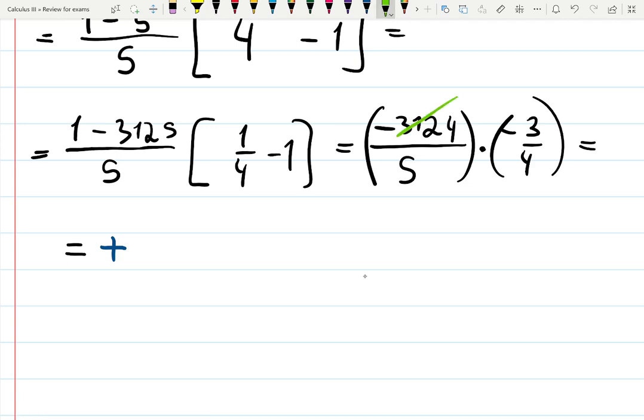But this number actually divides over 4 pretty nicely, it's 781. 781 times 3 over 5.